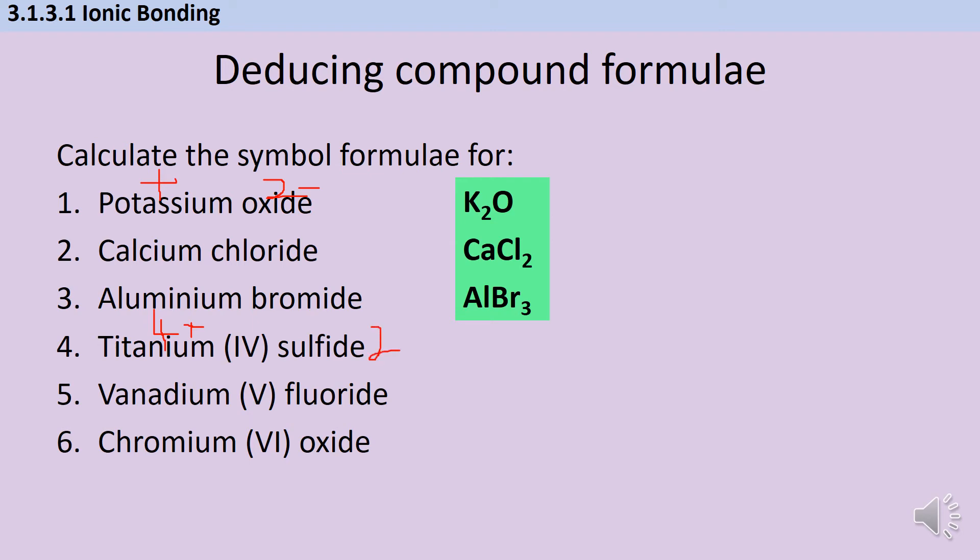Vanadium(V) chloride has a 5+ charge, so I have VCl5. Chromium(VI) oxide: chromium(VI) has a 6+ charge, this is hexavalent chromium from Erin Brockovich if you know the film. Oxide is 2-, so we need 3 oxide ions for every 1 chromium ion, giving a final formula of CrO3.